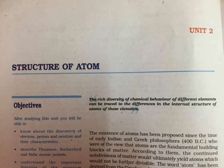Scientists also needed to understand the origin and nature of the characteristics of electromagnetic radiation absorbed or emitted by atoms. Section 2.1: Subatomic Particles. Dalton's atomic theory was able to explain the law of conservation of mass, law of constant composition, and law of multiple proportions very successfully. However, it failed to explain the results of many experiments — for example, it was known that substances like glass or ebonite when rubbed with silk or fur generate electricity.